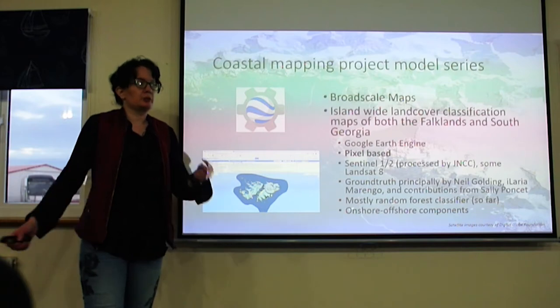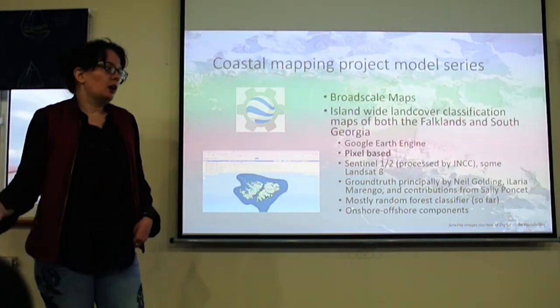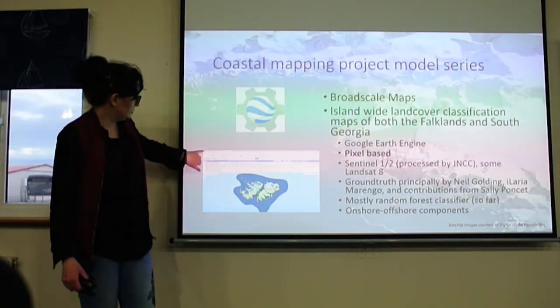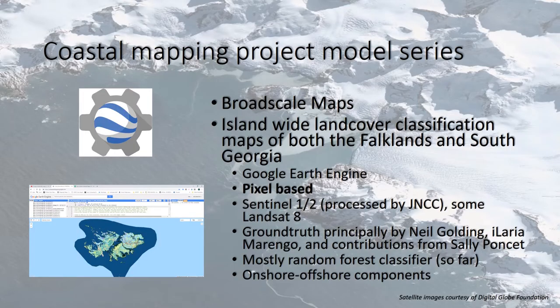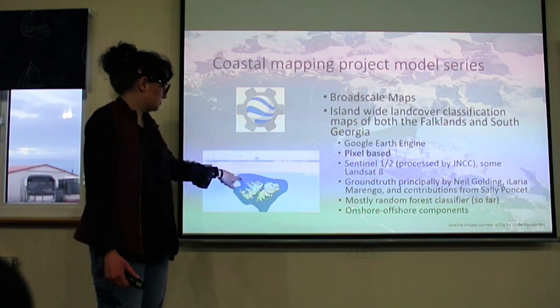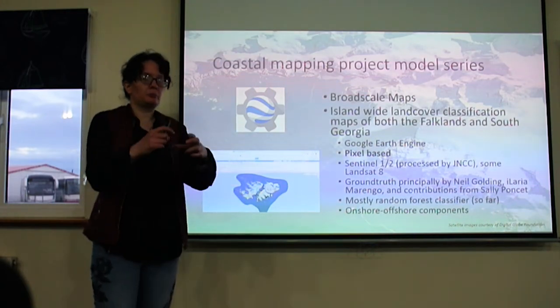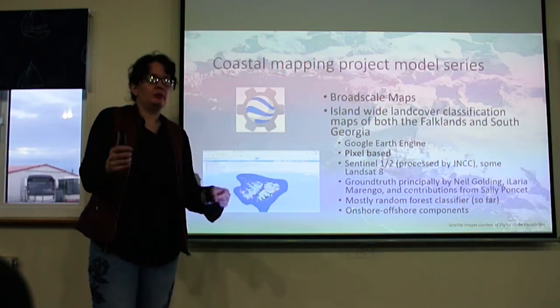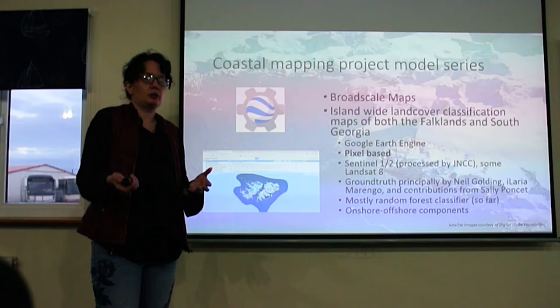In a pixel-based approach, as opposed to an object-based approach, you look at every single little cell — each pixel — in the image, and you decide what type of landscape, what kind of land cover, is represented by that pixel. This is a bit different than an object-based approach, which breaks the ground into similar groupings of pixels, and then you decide for an entire group of pixels what the characteristics are and what class best fits. But we went with pixel-based for Earth Engine.